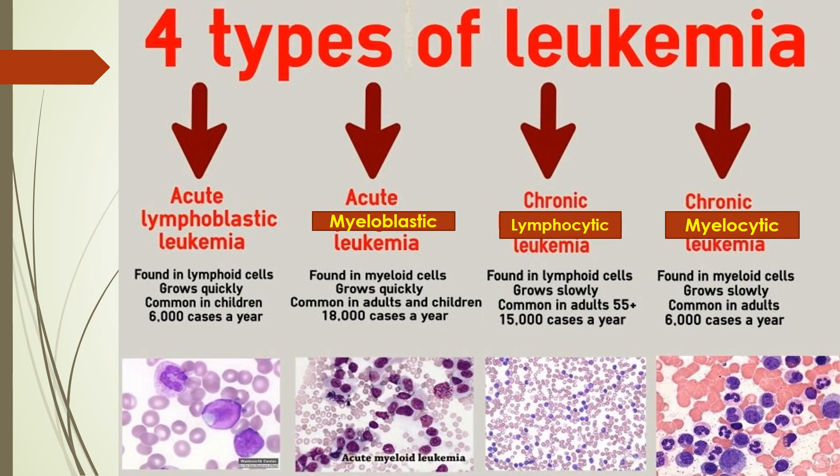There are four types of leukemias: acute lymphoblastic leukemia, acute myeloblastic leukemia, chronic lymphocytic leukemia, and chronic myeloblastic leukemia. Pictures of each are shown at the bottom of the slide, which will be described in the next slide.